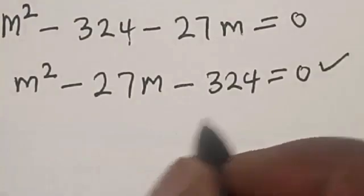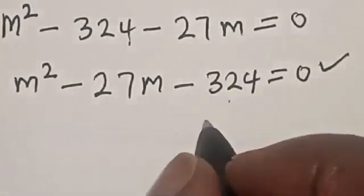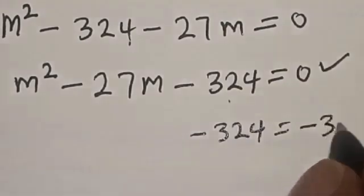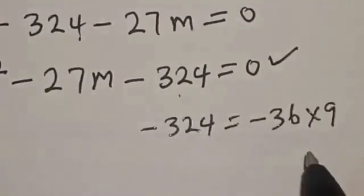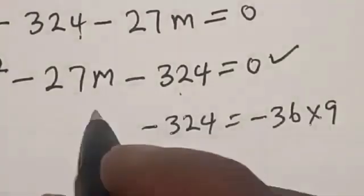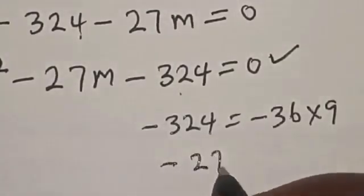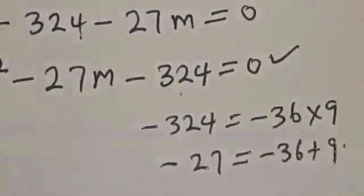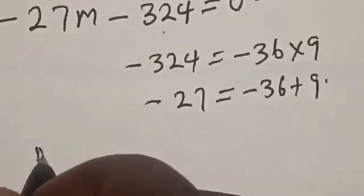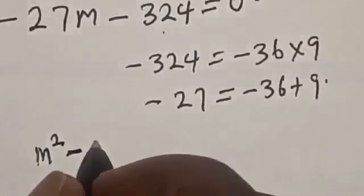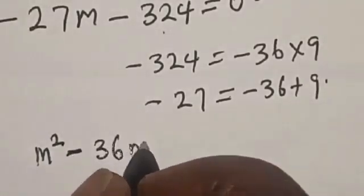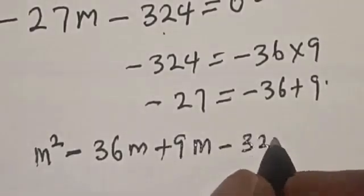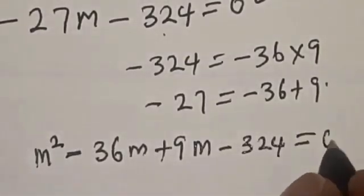We look for two numbers such that their product gives minus 324 and their sum gives minus 27. Minus 324 equals minus 36 multiplied by 9, and minus 27 equals minus 36 plus 9. Therefore, we split the middle term accordingly.